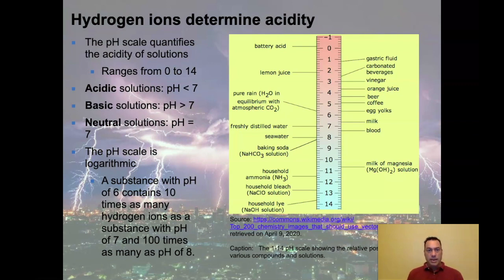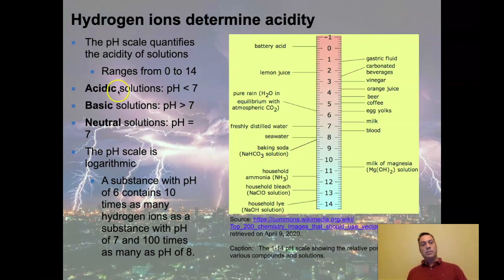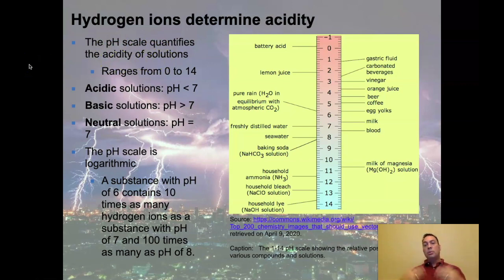Hydrogen ions are essentially just protons. Hydrogen is element number one — one proton with one electron — and if it's an ion it has no electron, so we're just talking about a proton. This means we can have rogue protons moving around the environment, and keeping track of them is a really big deal. We do this through something called the pH scale, which quantifies the acidity of solutions by measuring how many loose protons are in a system.